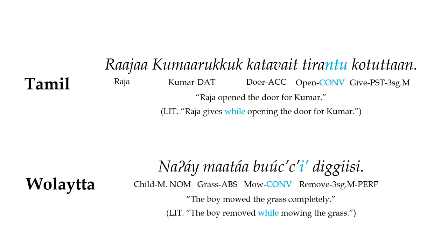Converbs can also give rise to new tenses, aspects, or moods when used in auxiliary verb constructions. The auxiliary will typically take all of the marking for person and tense, while the lexical verb will be rendered as a converb and left without any such marking.